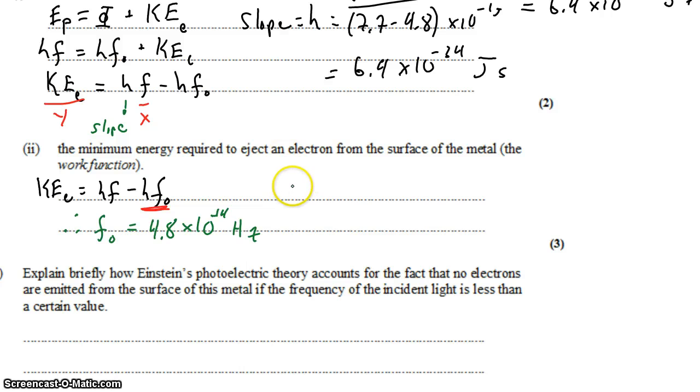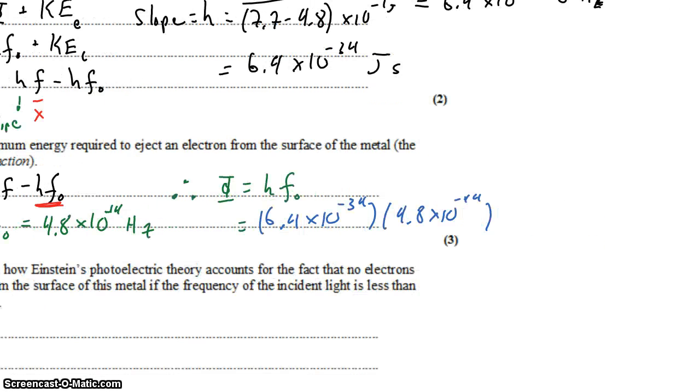Which means the work function is hf₀, or using what we found before, 6.4 times 10 to the negative 34 times 4.8 times 10 to the 14th. That gets us about 3.1 times 10 to the negative 19 joules.